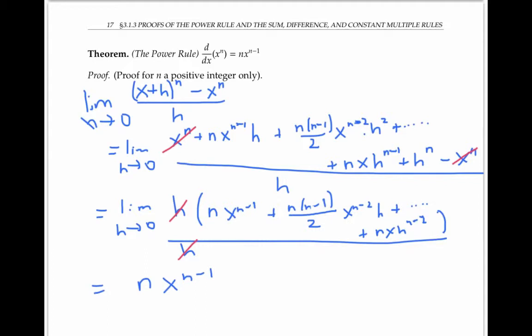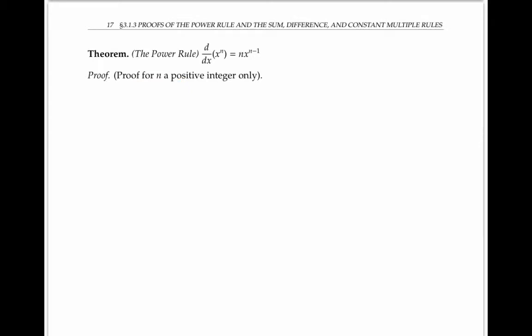That's a pretty good proof if you're comfortable with the binomial formula. But if you haven't seen the binomial formula before, that might leave you feeling a little cold. So I'm going to offer another proof using the other form of the limit definition of derivative, where f'(a) is the limit as x goes to a of f(x) minus f(a), over x minus a. So that's x^n minus a^n, over x minus a.